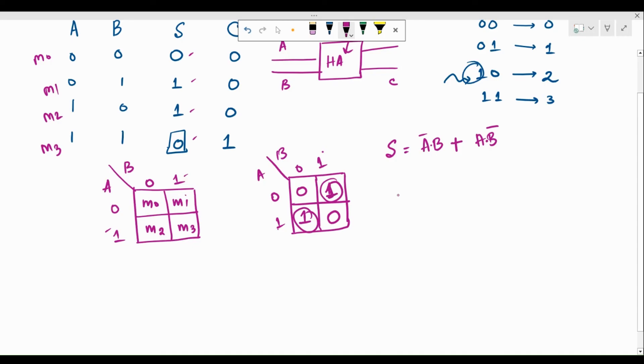Now, A bar B is nothing but minterm 1, m1 and A B bar is nothing but m2. So, when we write S, we can write it in this manner sigma of 1 comma 2 or we can simplify this expression because this is the expression for the XOR gate. So, we can just say that it is equal to A XOR B.